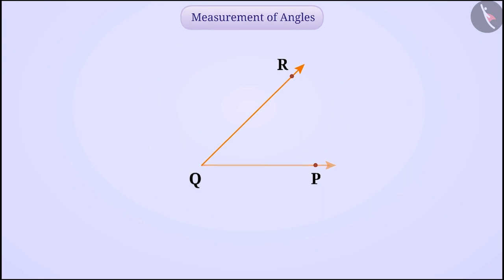Look, here is ray QP and ray QR. They are starting from the same common starting point Q and create an angle PQR. Here, point Q is the vertex of angle PQR. Similarly, ray PQ and ray QR are the sides of the angle PQR.